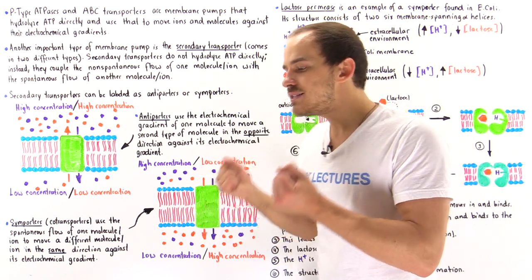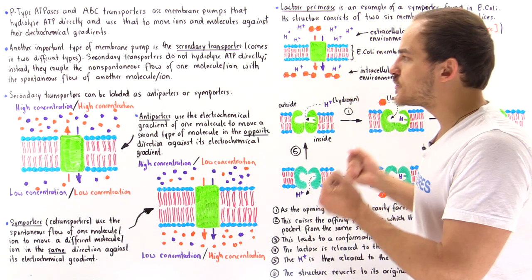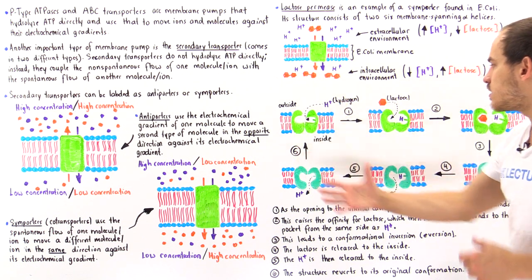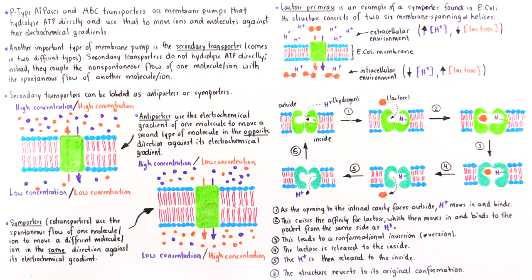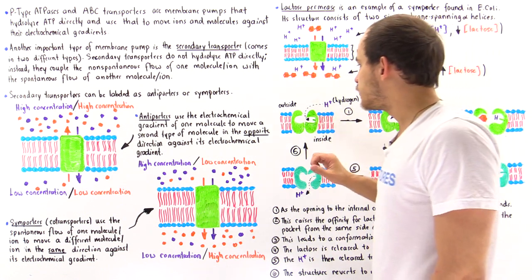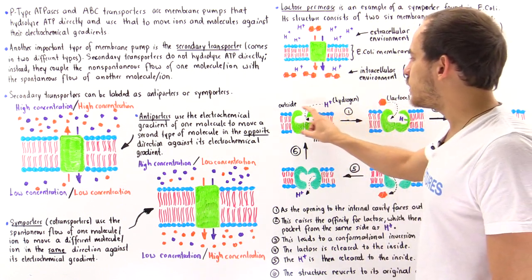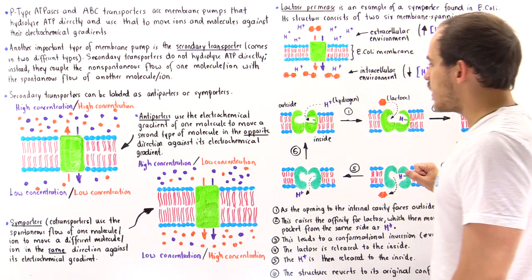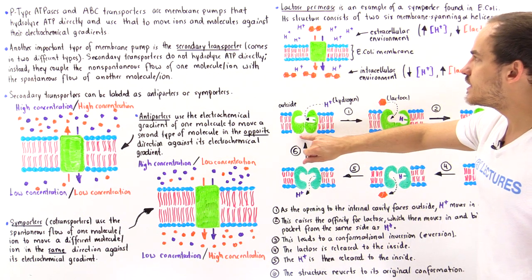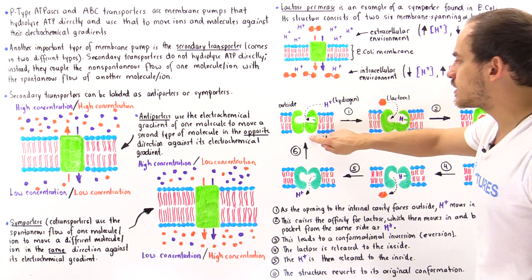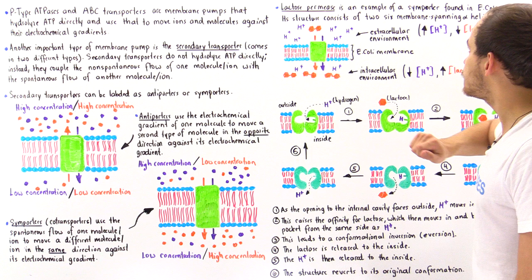But what exactly is the action mechanism? Let's take a look at the following six diagrams, beginning with diagram one. We have our E. coli cell membrane, and this is our lactose permease, consisting of two halves.